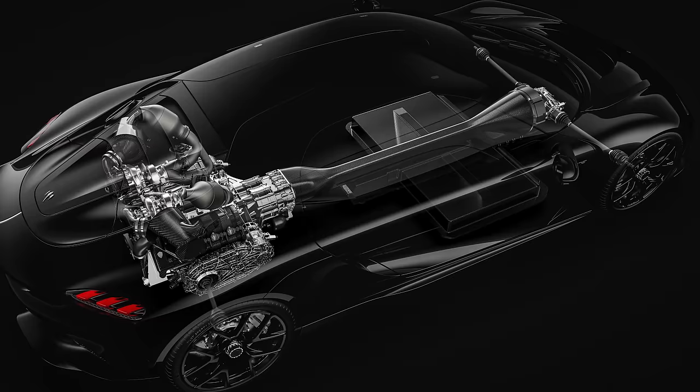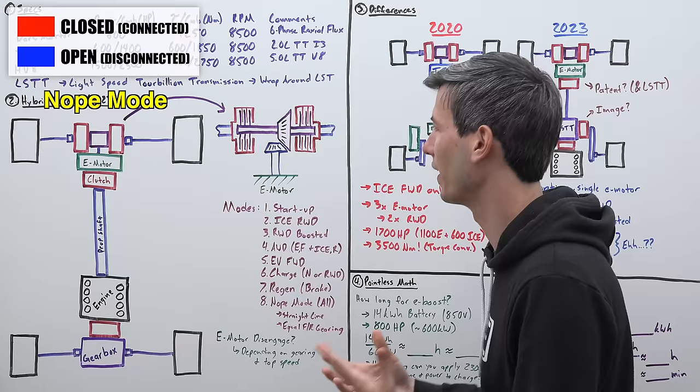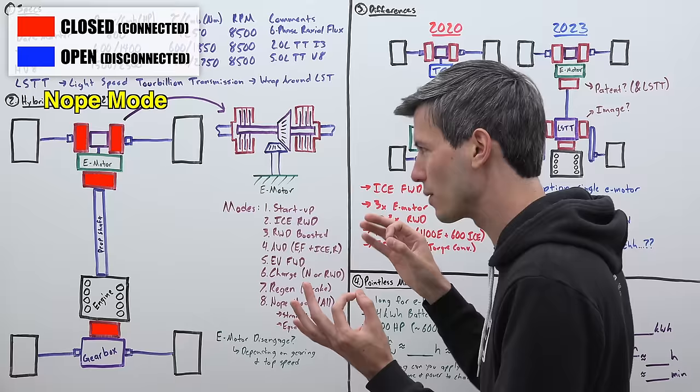And then finally we have what I am going to call a nope mode. This is where you engage all of the clutches fully. So they're all locked up and this really won't work. There's one specific driving scenario in which it's theoretically possible for it to work.